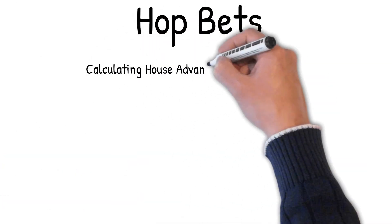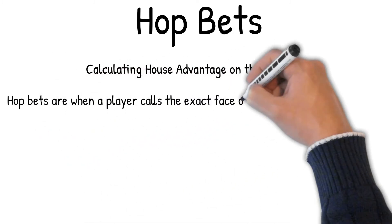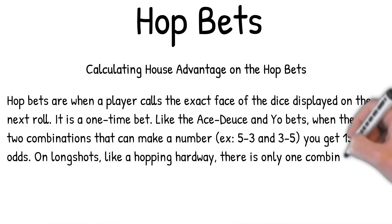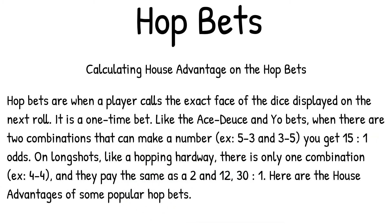Calculating house advantage on Hop bets: Hop bets are when a player calls the exact face of the dice displayed on the next roll. It is a one-time bet. When there are two combinations that can make a number — for example five-three and three-five — you get 15 to one odds. On long shots like a hopping hardway, there is only one combination — for example four-four — and they pay the same as a two and twelve: 30 to one.